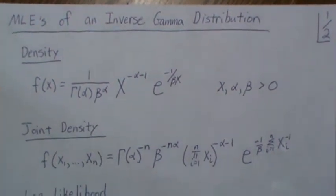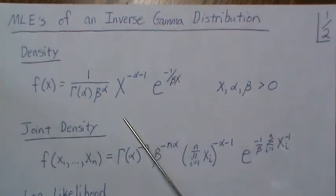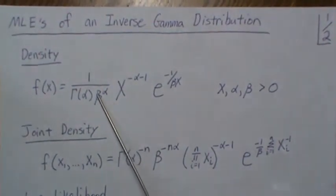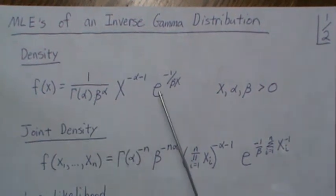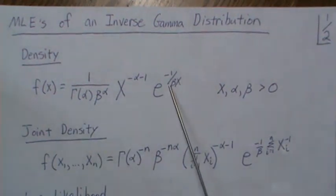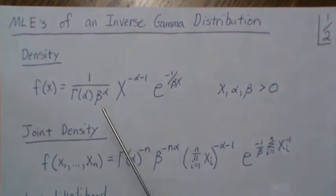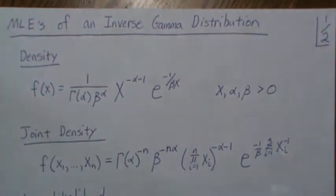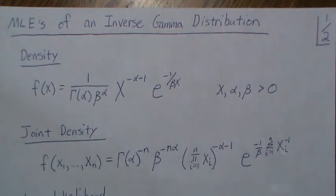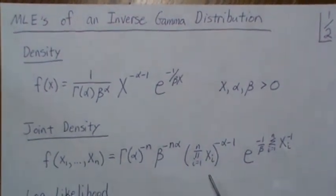Here is the density for an inverse gamma distribution. One note is that the betas here are in the denominator, same here. Now some like to write these betas in the numerator, which is fine, it just means that the formulas will be slightly different. You have to appreciate which version you're using.